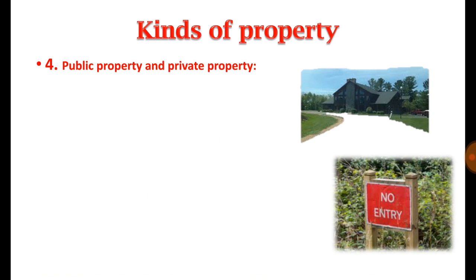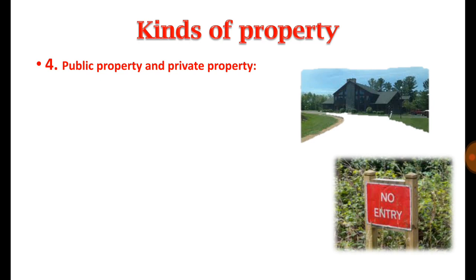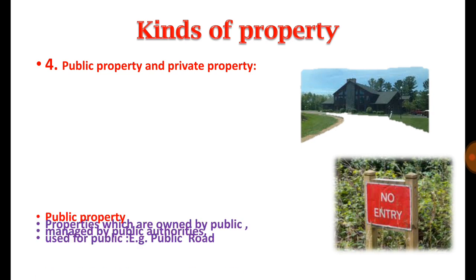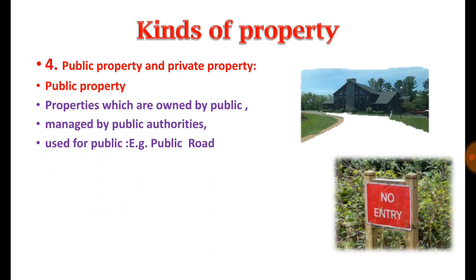The next kind of property is public property and private property. When an individual owns a particular property exclusively and enjoys ownership rights, possession, and the right to exclude others, and is entitled to dispose of that property, such properties are called private property. Public properties are those owned by the public through public authorities or government and kept for public benefit.